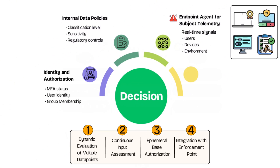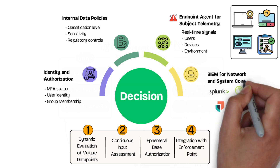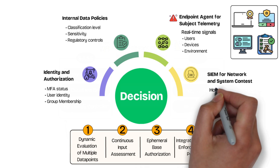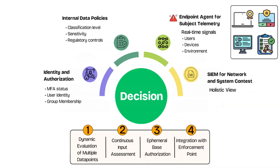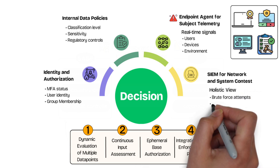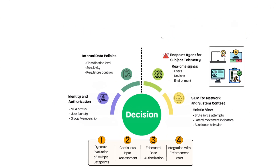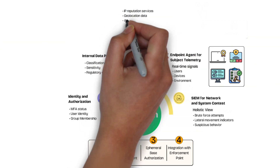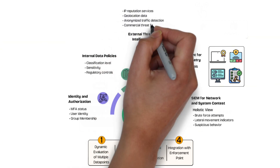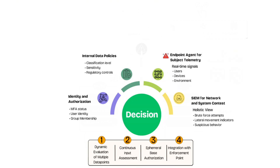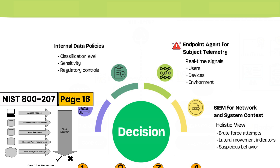SIEM platforms like Splunk, QRadar, or Elastic Security can also contribute broader threat intelligence by aggregating logs and alerts from nearly any device, system, or application in the environment. This integration gives the decision point a holistic view of what's happening beyond just a user's device — such as recent brute force attempts into a network device, lateral movement indicators, or other suspicious behavior on adjacent systems. The decision point can also ingest signals from external threat intelligence sources, including IP reputation databases, geolocation data, anonymized traffic detection, and commercial threat feeds.